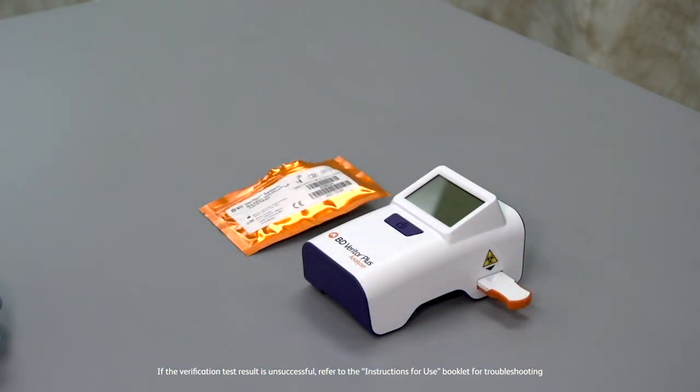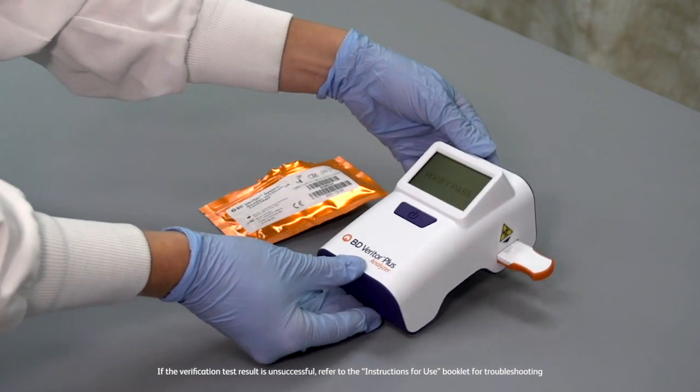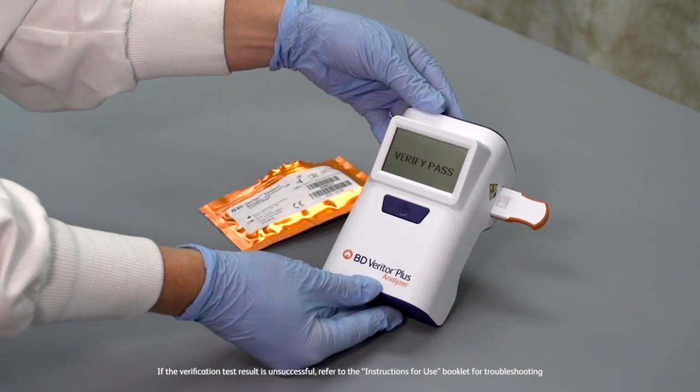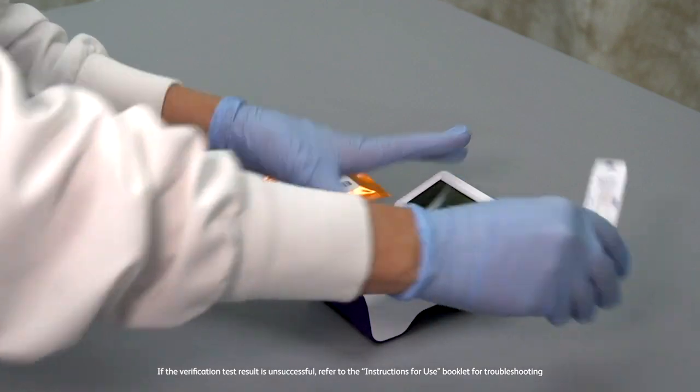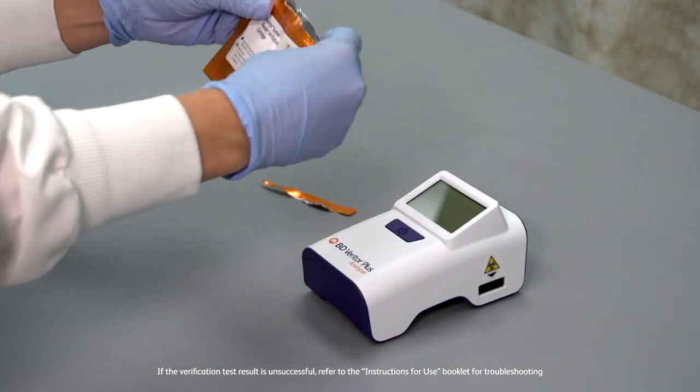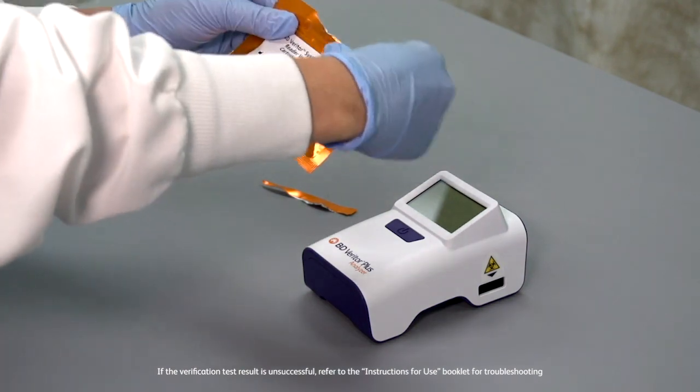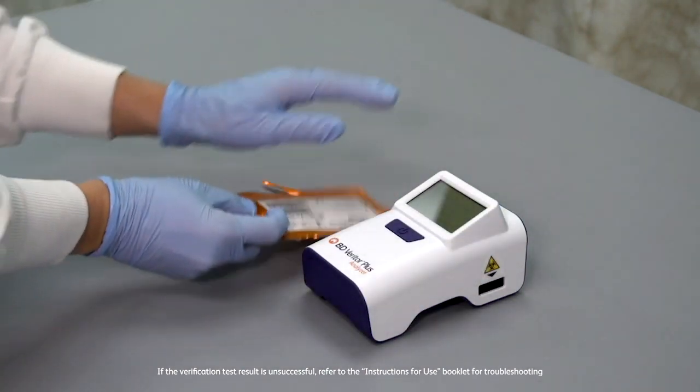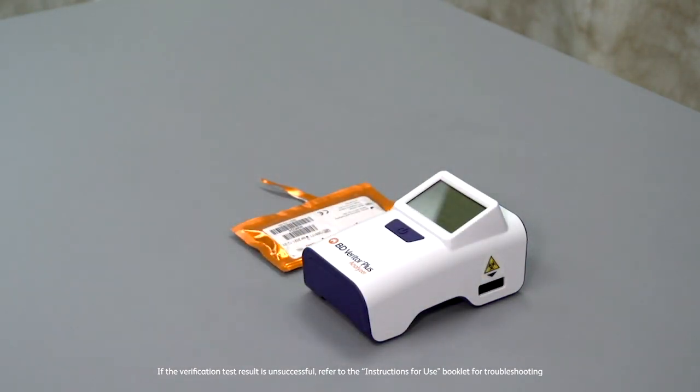After a quick three-second reading and analysis, Verify Pass appears on the LCD screen. Store the verification cartridge in the original Ziploc pouch for regular use. The frequency of verification testing is determined by each site's regulations or practices.